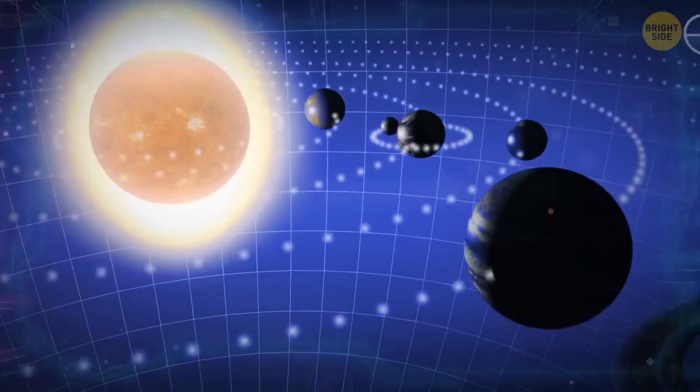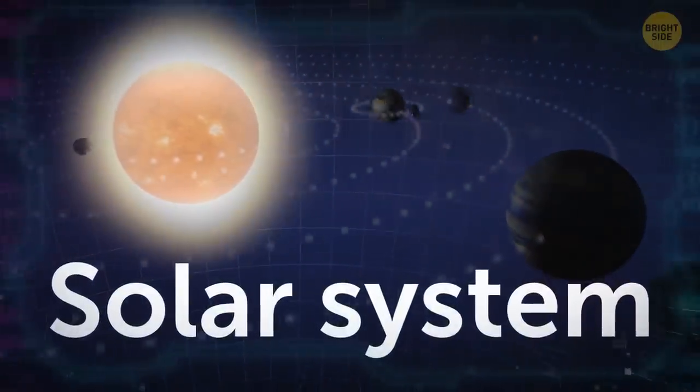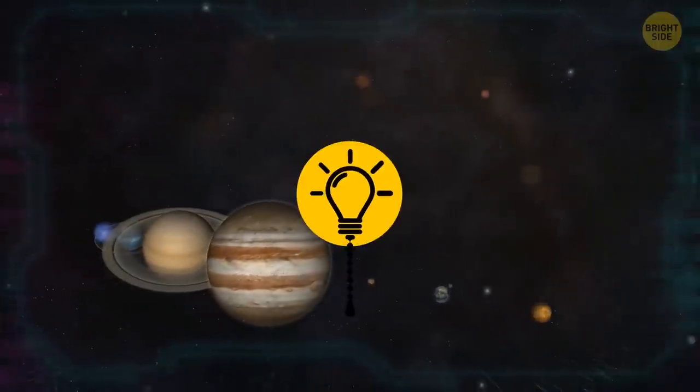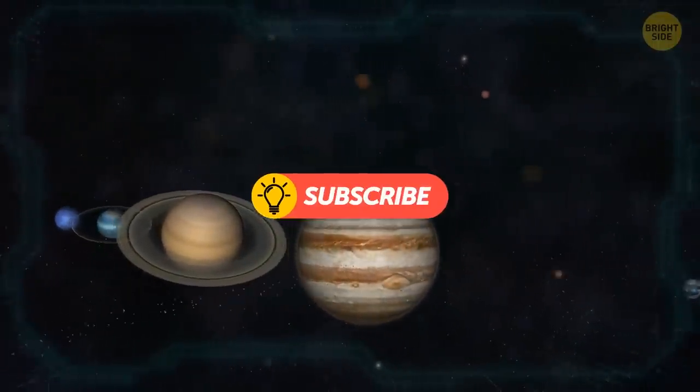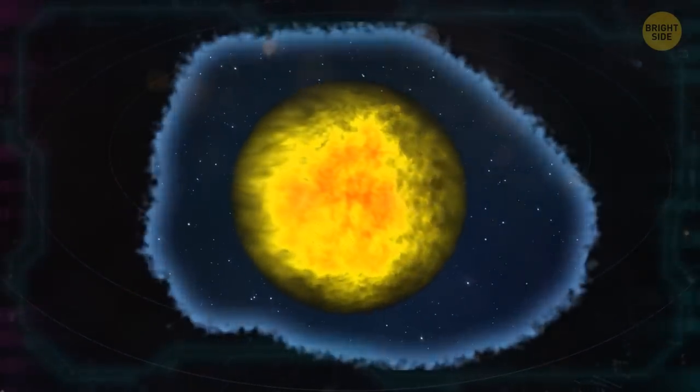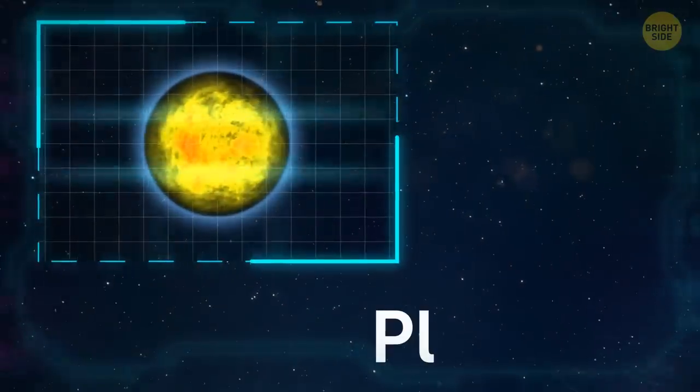For years, we've been told there are 8 planets in our solar system. 9, if you count Pluto, which got kicked out of the club some years ago. But that might all be about to change. There may be an enormous secret world lurking in the midst of our system, which scientists are calling Planet 9.